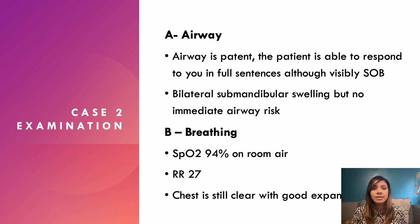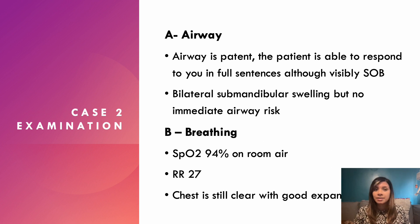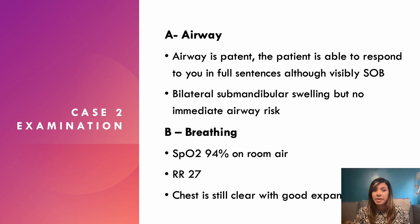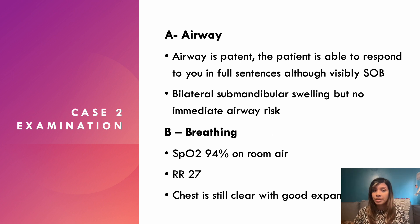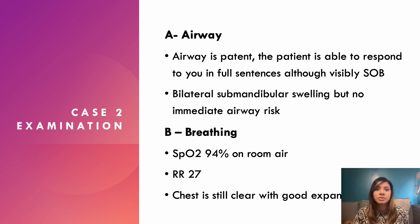She's maintaining sats of 94% on room air and her chest is clear per the A&E doctor. The A to E is not just assessment — we need interventions. The first thing: give this patient 15 litres of oxygen via a non-rebreather mask. She's desaturating and breathing quickly, so she definitely needs an ABG. We'd also get a chest X-ray to rule out other lung pathology.